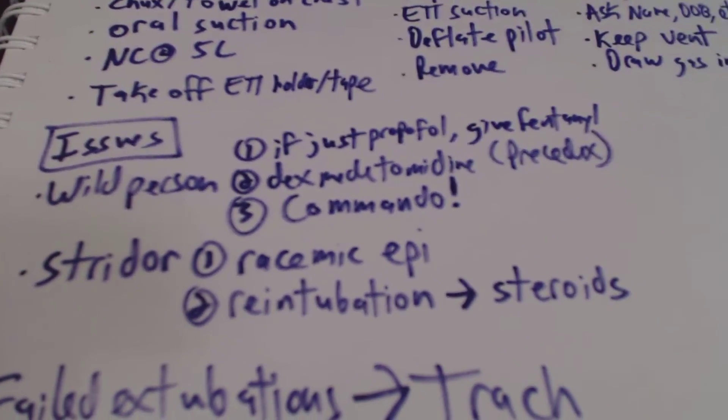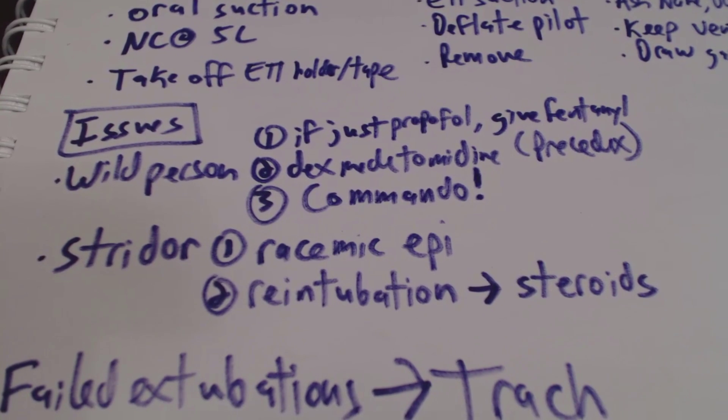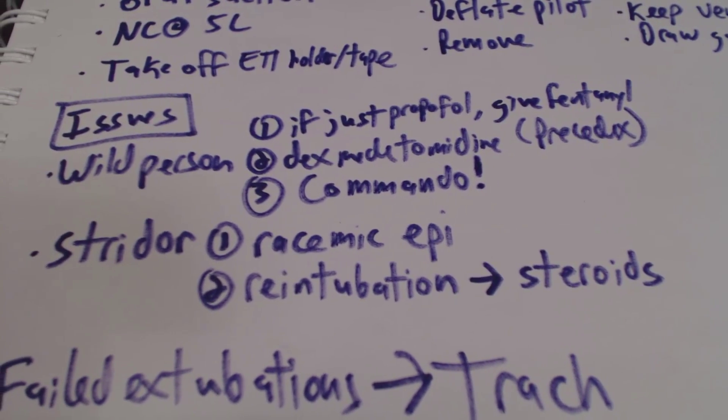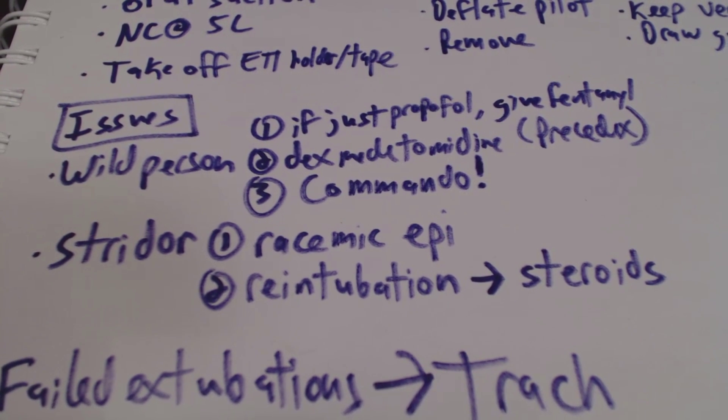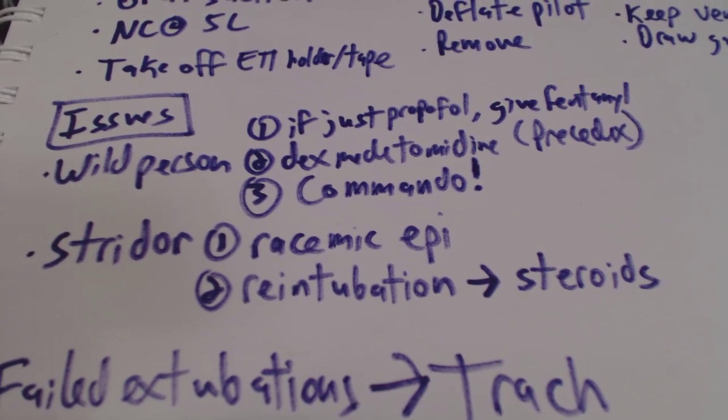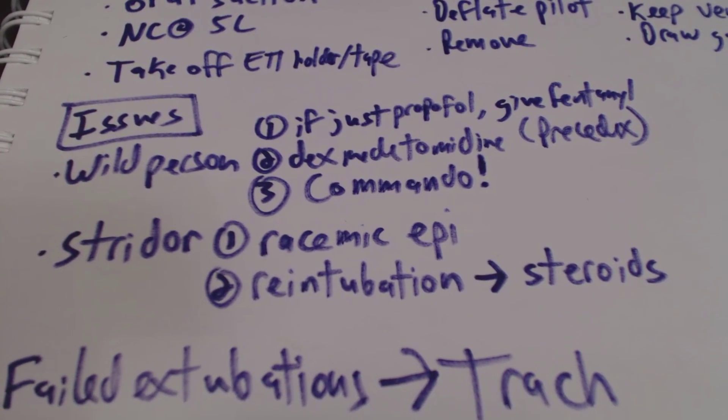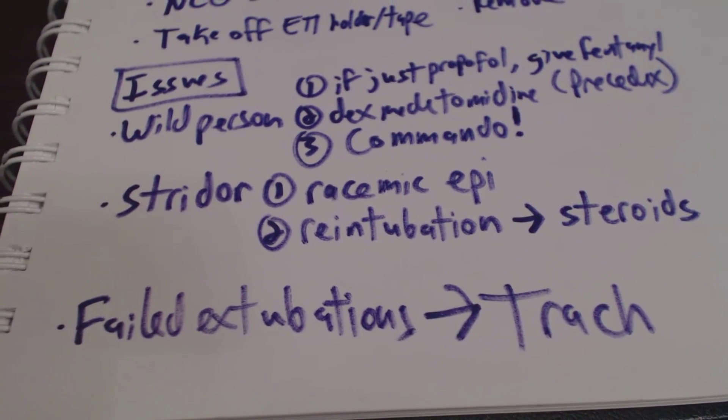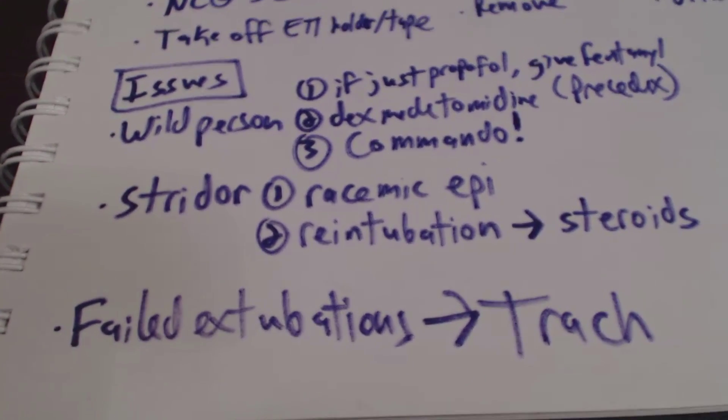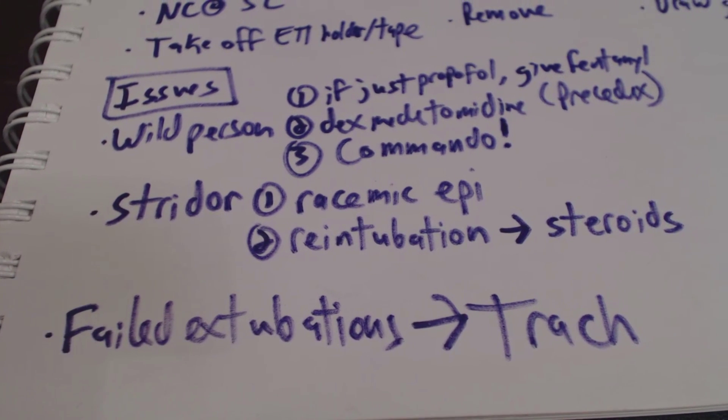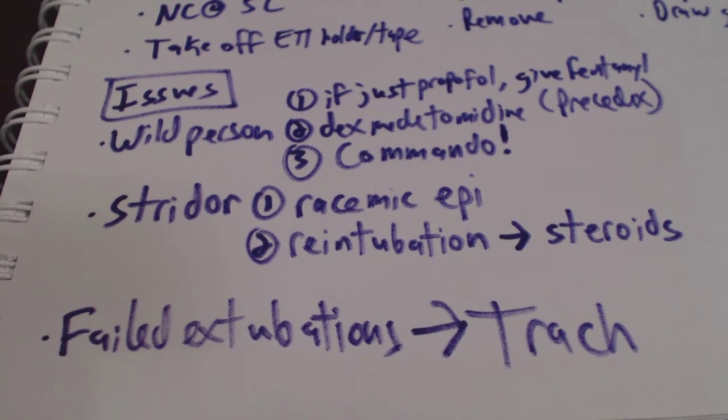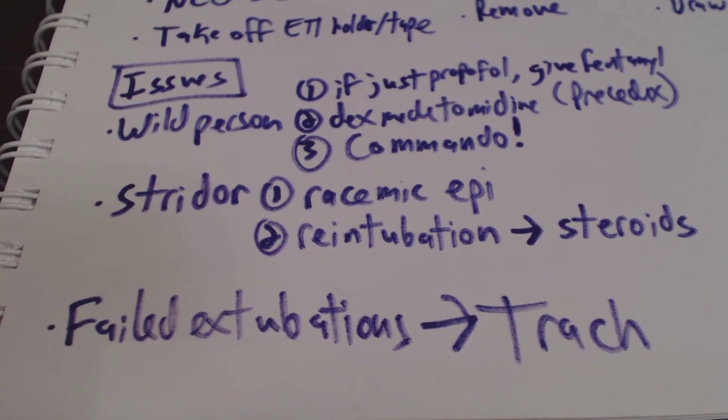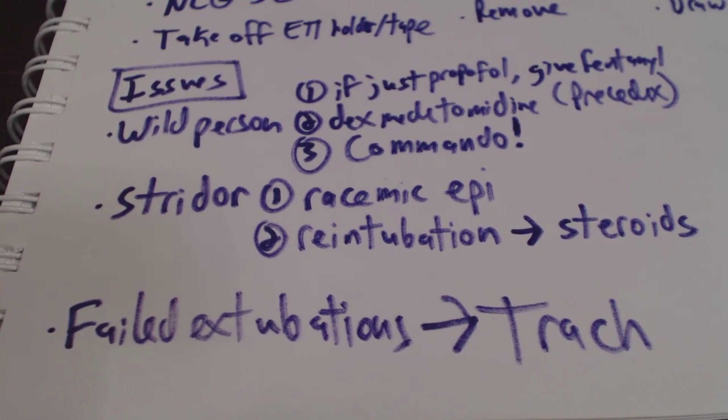Now, the issue that we can run into is that if a patient has a stridor, we will start some racemic epinephrine. Another thing that we'll have to do as well is re-intubate. And we can also give them some steroids to help with inflammation. Now, if we continue to have failed extubations, a trach is definitely in the plan. And usually, I think, for us, it's three failed extubations, and then we will definitely start thinking about doing a trach.